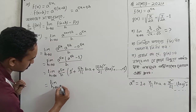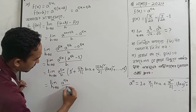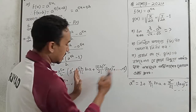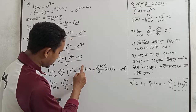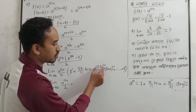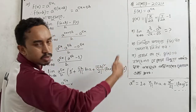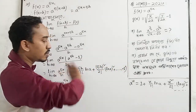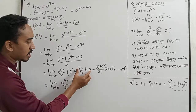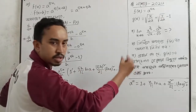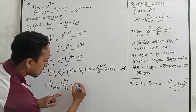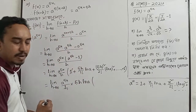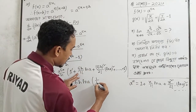Taking the limit as h tends to 0, we cancel out terms. a to the power 5x into — taking limit h tends to 0 of a to the power 5h minus 1 divided by h — gives 5 times ln a. So d by dx of a to the power 5x equals 5 ln a times a to the power 5x. Which is 1 by 1 factorial times 5.